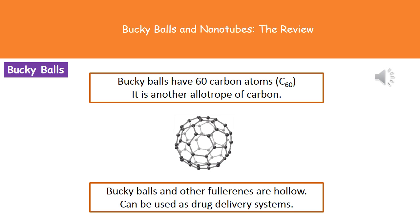Welcome to our review on buckyballs and nanotubes. In our previous video we had a look at the structures and properties of two other allotropes of carbon: diamond and graphite. Buckyballs are also carbon allotropes. The key thing to remember about buckyballs is they've got 60 carbon atoms, giving them the formula C60.